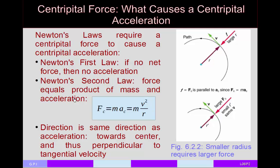Here is a diagram showing these forces for both a large and a small circle. The larger the circle, the smaller the force needed to keep the same object on that circle at the same speed, and vice versa. The speed is itself constant, but the velocity is changing because it's a vector quantity. The force is perpendicular to the velocity vector because the centripetal acceleration must be perpendicular to the tangential velocity.